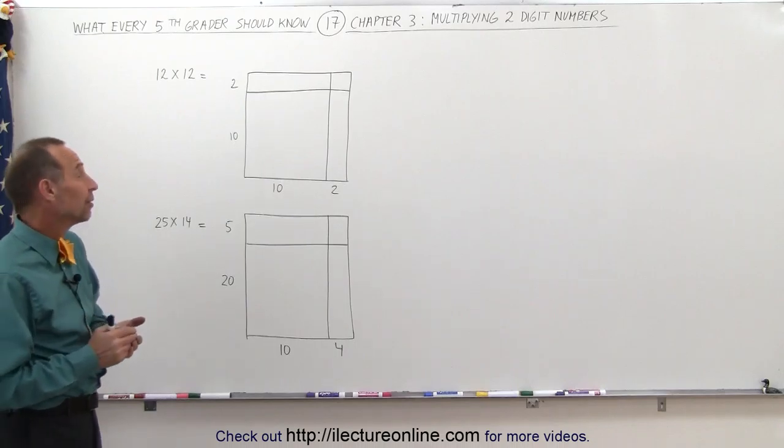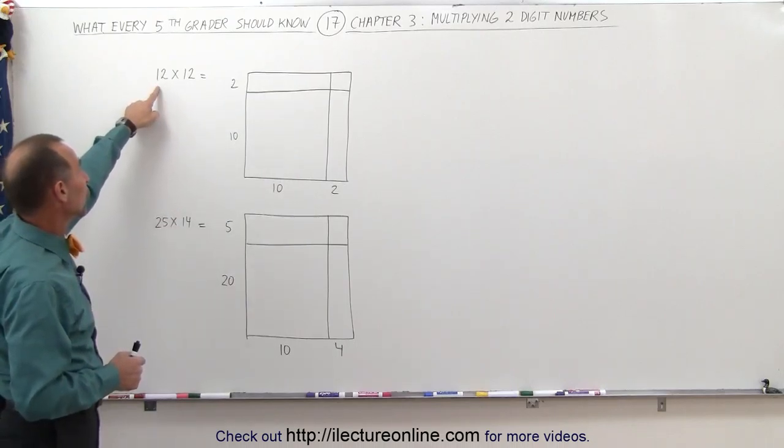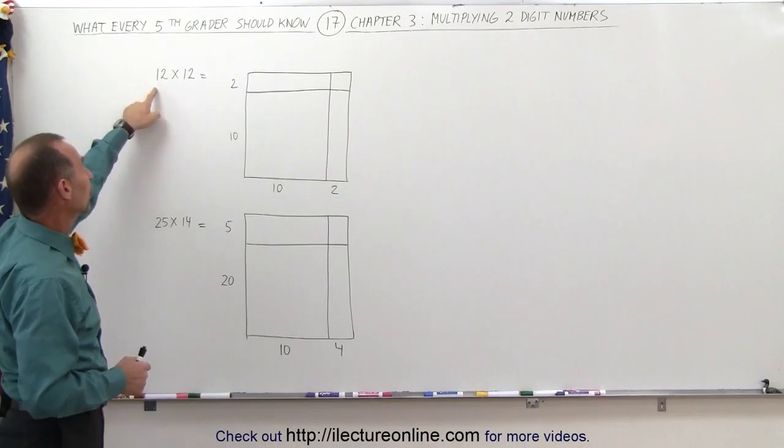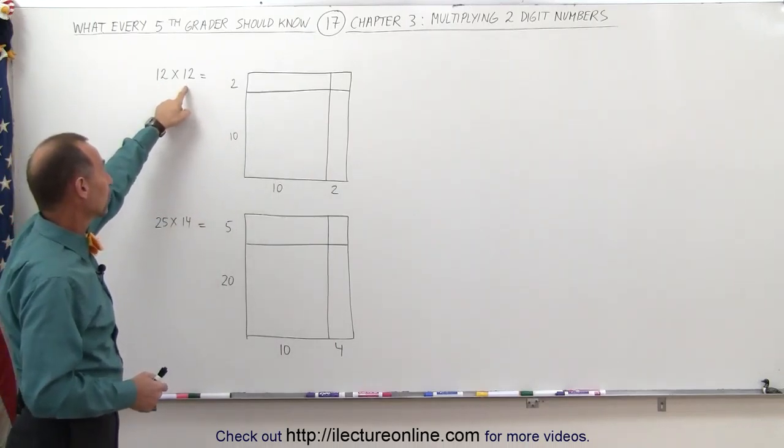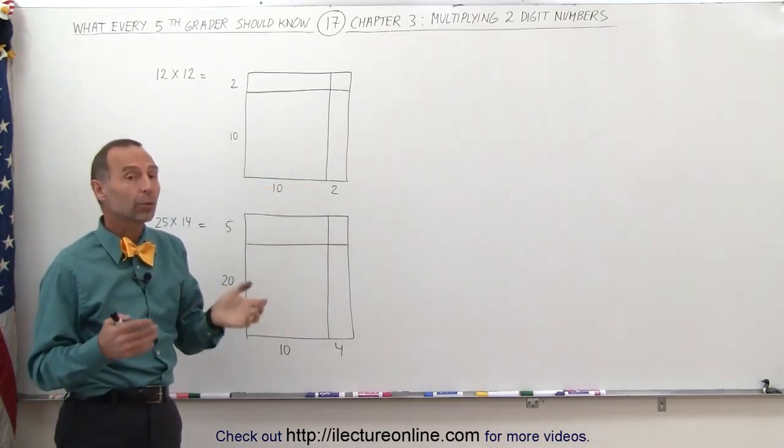What we've done here is taken up, for example, the multiplication 12 times 12. The number 12 can be split up into 10 plus 2 and the other number 12 can be split up in 10 and 2.